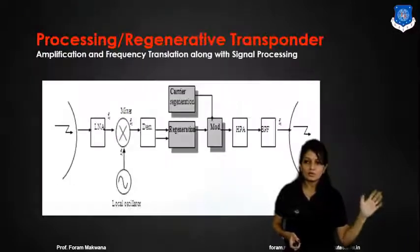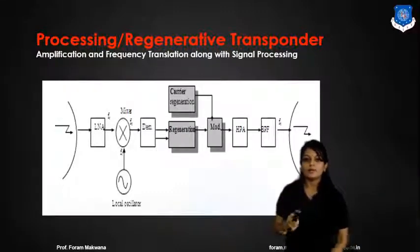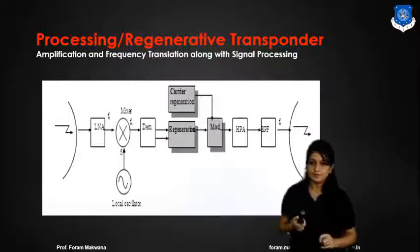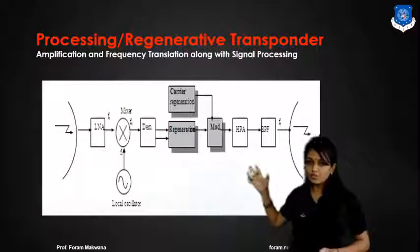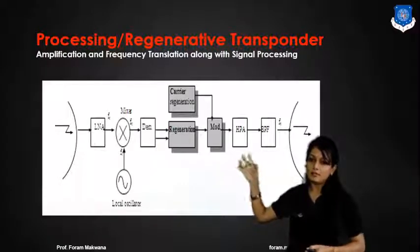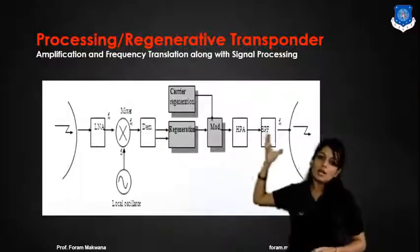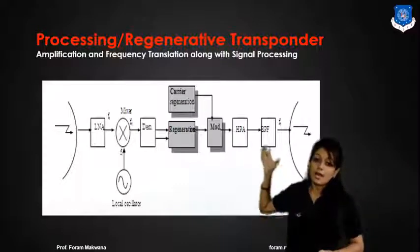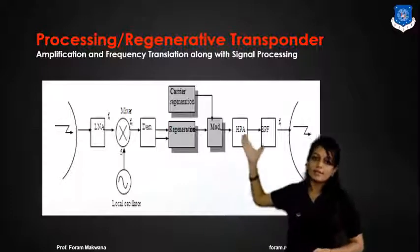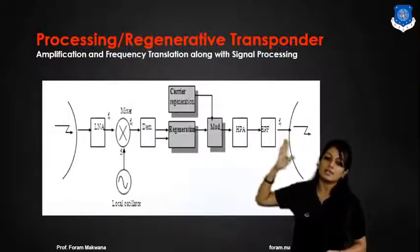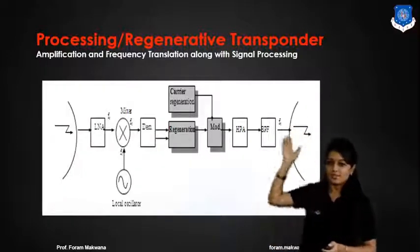There is low processing of any kind of signal. For signal processing, we require a regenerative transponder. That consists of an antenna, low noise amplifier, mixer, and demodulator. Then regeneration is done with the help of on-board regeneration. This is applied to the modulator. After modulation, a high power amplifier block amplifies the signal, which is then applied to a bandpass filter and transmitted by the transmitting antenna.